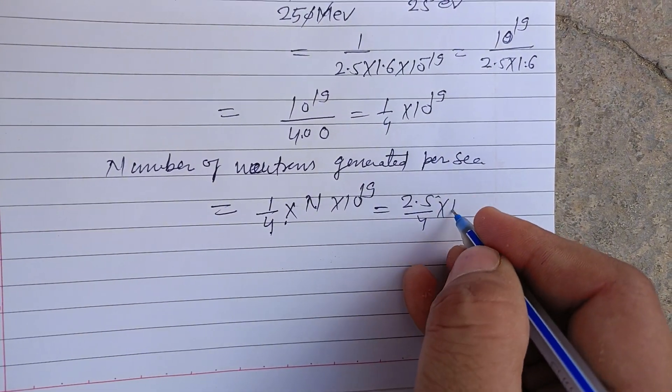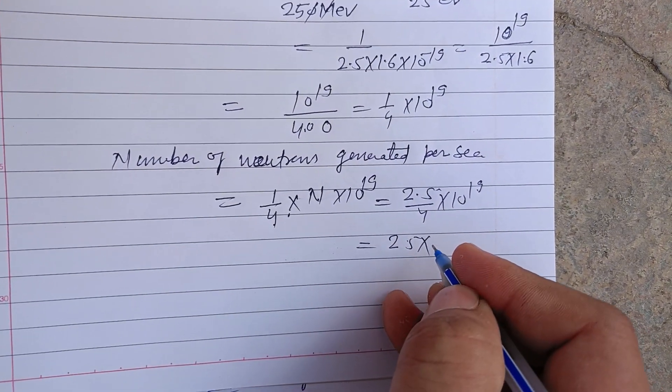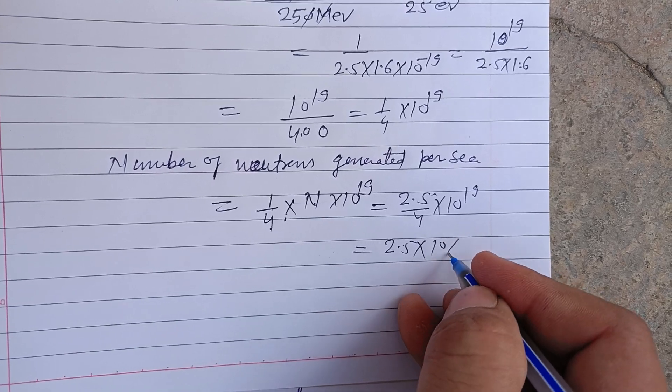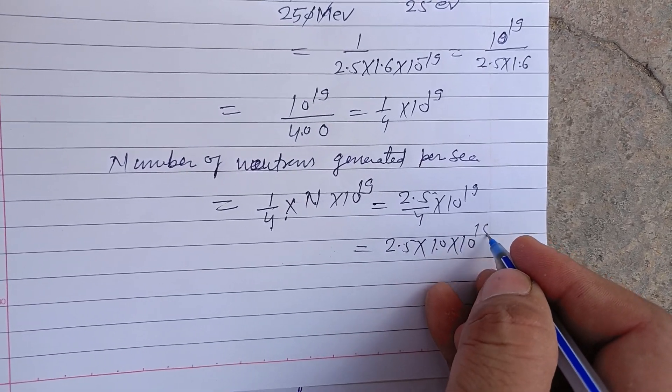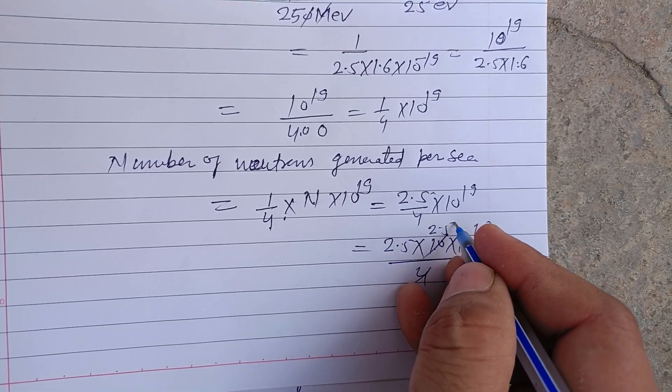So 2.5 upon 4 into 10 to the power 19. We write 2.5. This can be written as 10 into 10 to the power 18 upon 4. And we divide 10 by 4, we got 2.5.